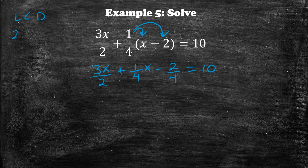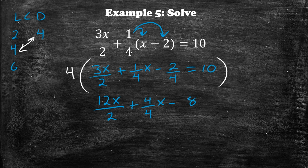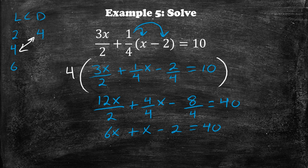The multiples of 2 are 2, 4, 6 — and 4 is already common between both, so the LCD is 4. We multiply the entire equation by 4: 4 times 3x over 2 gives 12x over 2, plus 4 over 4 times x, minus 8 over 4, equal to 40. Simplifying: 12x over 2 is 6x, 4 over 4 is 1 giving just x, and minus 2 equals 40. Combining like terms gives 7x minus 2 is equal to 40.